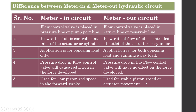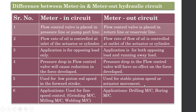The meter-out circuit is used for stable piston speed or actuator movement, since it handles both opposing and running away loads. It is also used where fine speed control is required, such as for grinding machines, milling machines, or welding machines. The meter-in circuit may be used for applications like drilling or boring machines. This covers the basic differences between meter-in and meter-out hydraulic circuits.